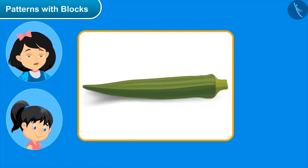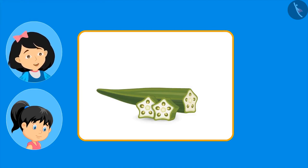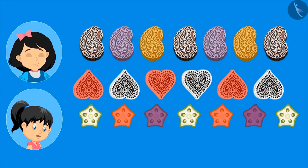Sister says: come, let me show you some more new block designs. Misty: yes please, I'm enjoying this a lot! Sister cuts a lady finger and explains: if we color this part and apply it to paper or cloth, it can also act as a beautiful block. Misty: yes, this is very similar to a block! Sister: yes, we can make different patterns from this too, like this — designs with the help of vegetables!